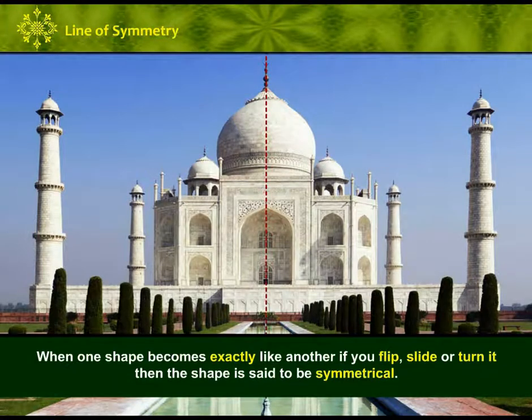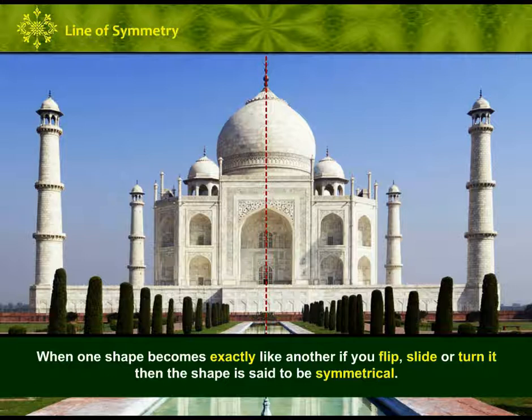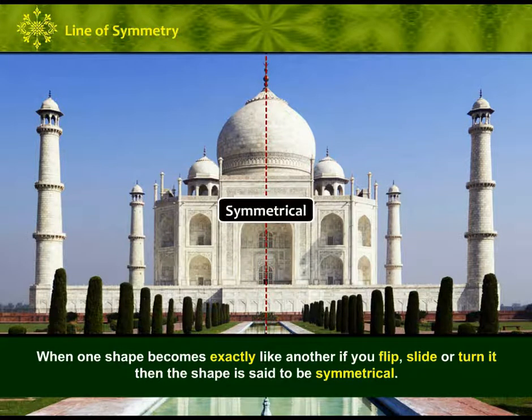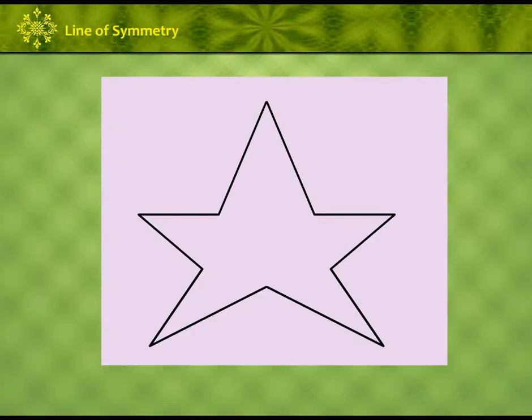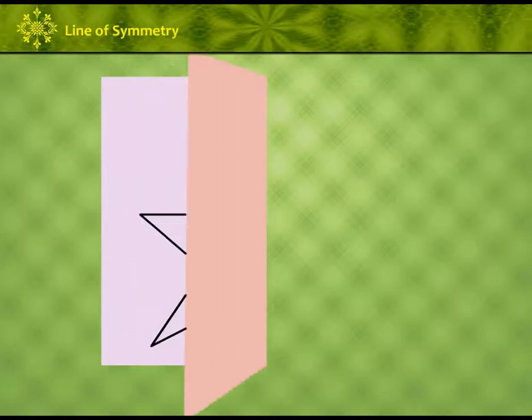When one shape becomes exactly like another if you flip, slide or turn it, then the shape is said to be symmetrical. Let us learn about line of symmetry. Look at this picture. Let us fold this picture into half.